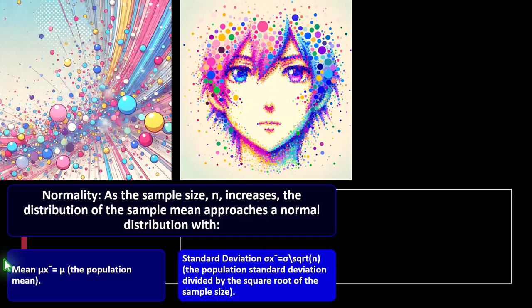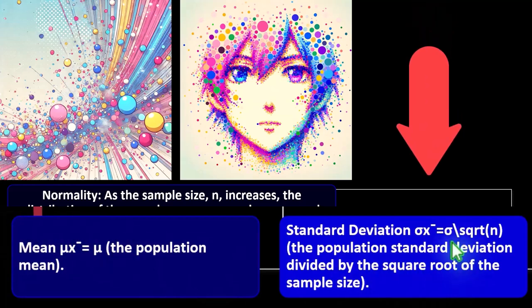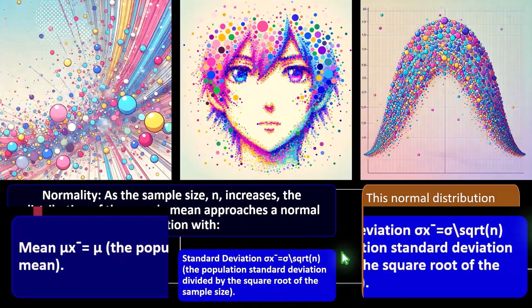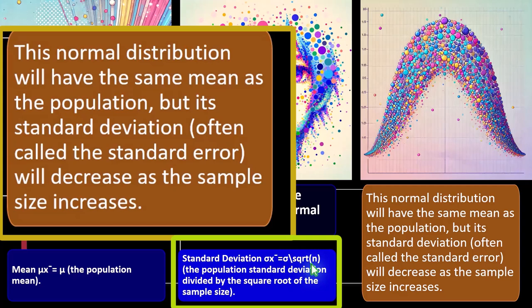So the mean — the population mean — and the standard deviation formula we're looking for is sometimes called sigma x-bar. The standard deviation of all combinations of sample means equals the standard deviation of the population divided by the square root of the sample size. This normal distribution will have the same mean as the population, but its standard deviation — often called the standard error — will decrease as the sample size increases, because n is in the denominator under the square root. As n goes up, the denominator increases.